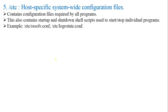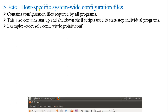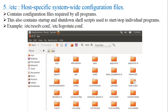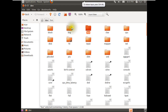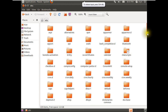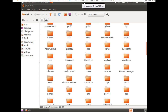Next is /etc — host-specific system-wide configuration files. It contains configuration files required by all programs, and also startup and shutdown shell scripts used to start and stop individual programs. Examples include /etc/resolv.conf and /etc/logrotate.conf. These kinds of files are stored in this directory. If you open the /etc folder, login and logout scripts will be found here.